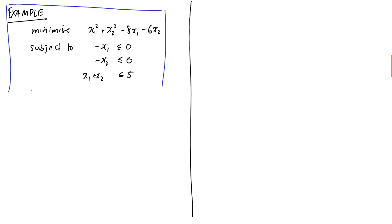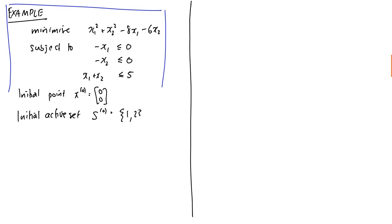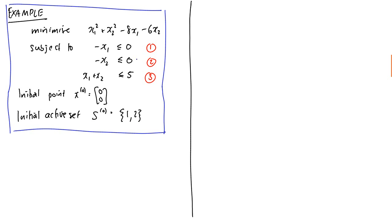We've also been told that our initial point x0 is the vector (0, 0), and our initial active set S0 is {1, 2}. We'll label our constraints 1, 2, and 3 so it's totally unambiguous. Now, remember what I mean by an active set: if I have active set S containing constraints 1 and 2, that means constraint 3 we can ignore, and constraints 1 and 2 hold with equality — so x1 equals 0 and x2 equals 0. You can see that specifies our initial point as well.